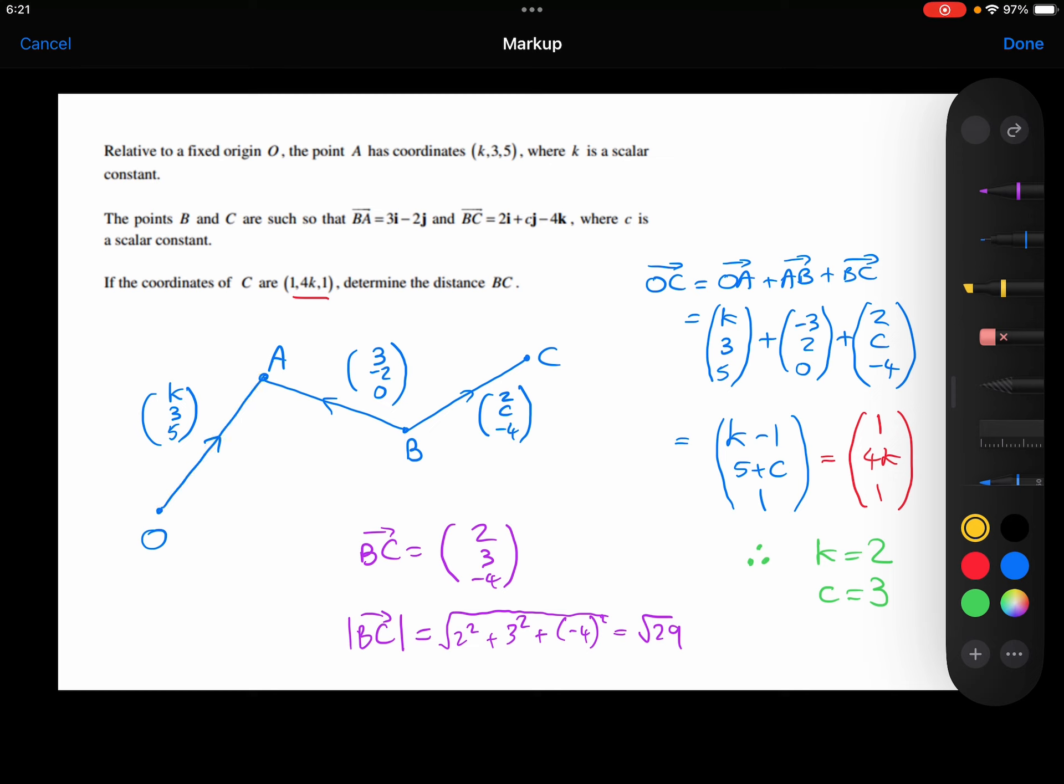We're then told that points B and C are such that the vector from B to A is 3i minus 2j. So I've marked that on here, I've marked on B, and I've drawn on the vector from B to A as (3, -2, 0).